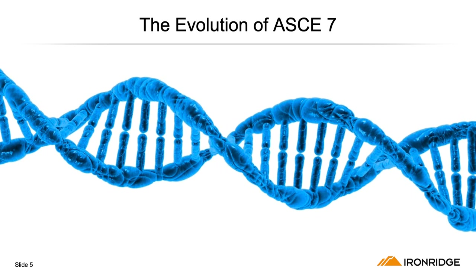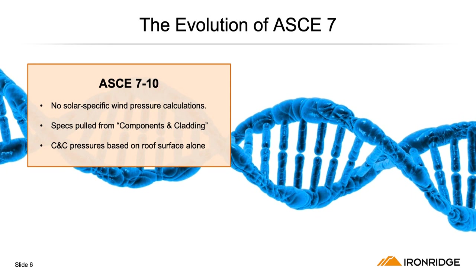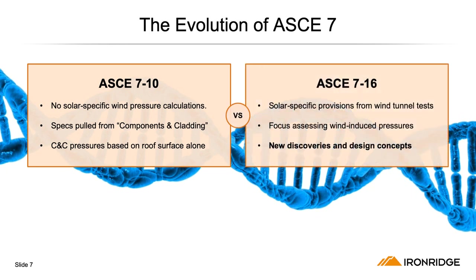The ASCE code has evolved significantly over the years. For example, 710 did not provide solar-specific provisions about the wind pressure calculations. Designers and engineers were relying on existing provisions from the components and cladding section, and wind pressures were based on the roof surface alone, with no consideration for a solar system on top of it. ASCE 716, on the other hand, has become more specific with regards to solar systems, with new data being obtained from wind tunnel testing.